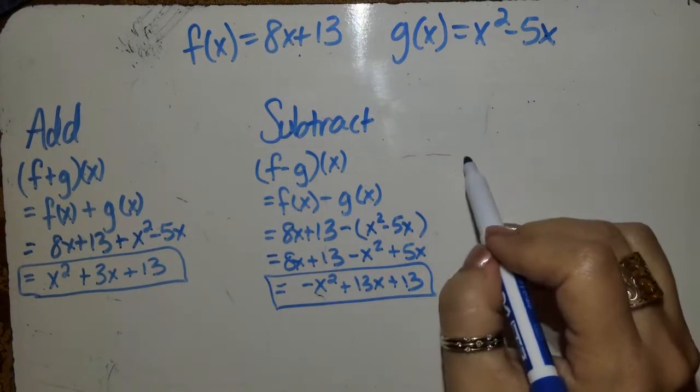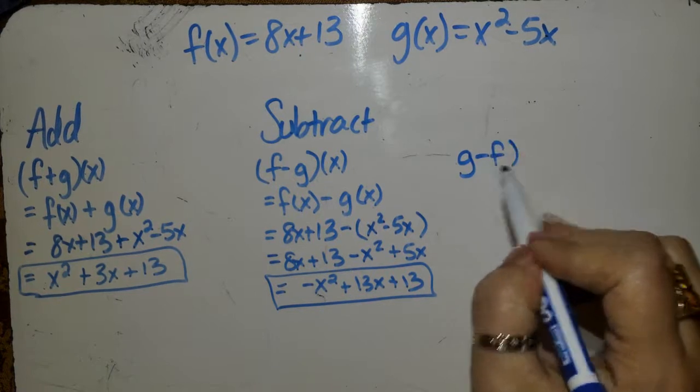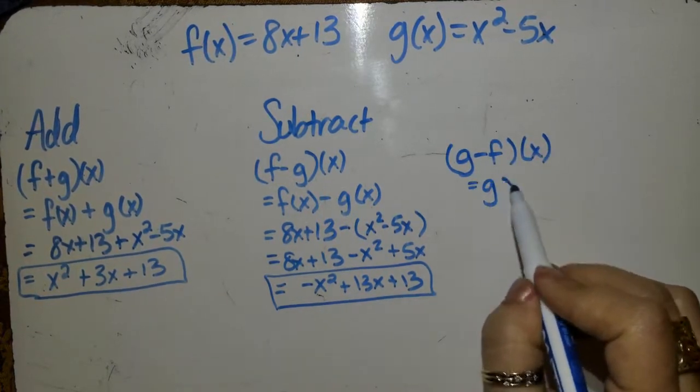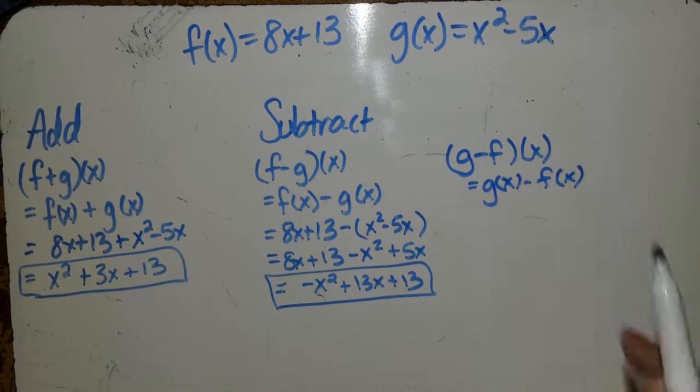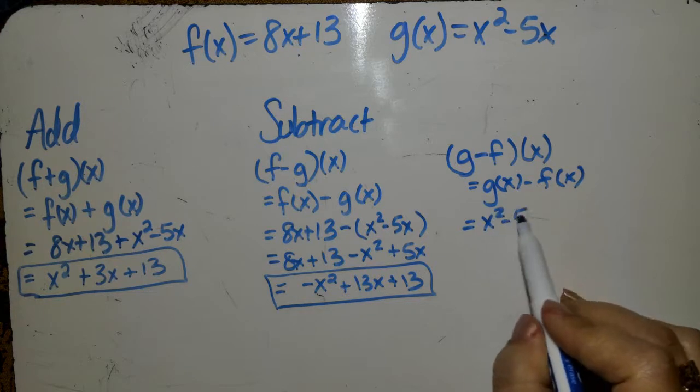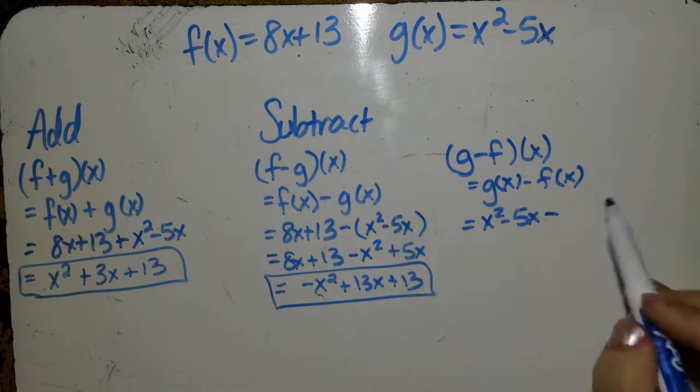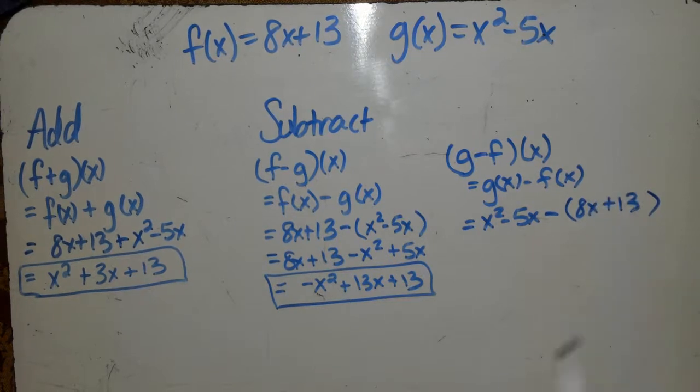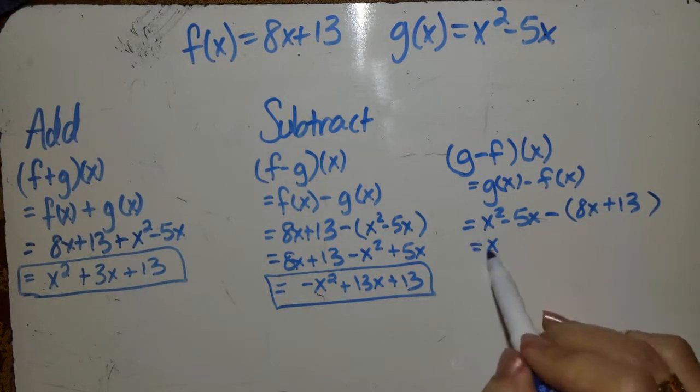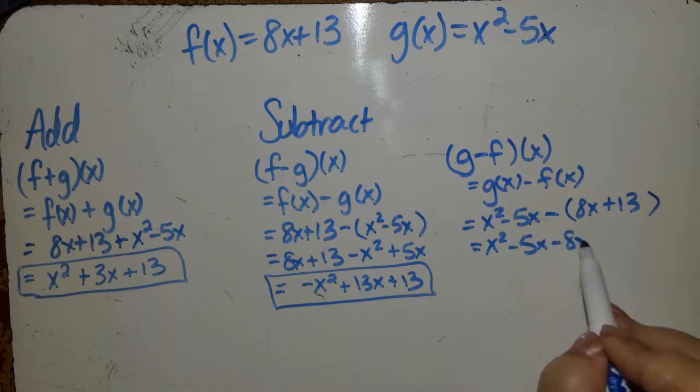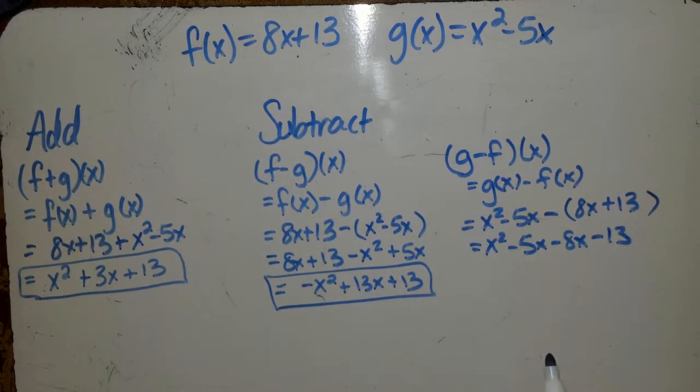The other way that you may see it is g of x, which is g of x minus f of x. I'm going to distribute the minus sign, changes both of those signs.